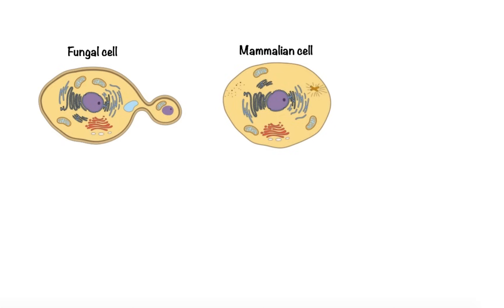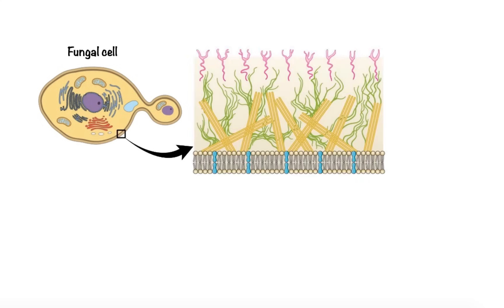The only significant difference between fungal and mammalian cells are the presence of fungal cell walls and a small structural difference in the plasma membrane. The cell wall of most fungi is composed of mannoproteins and rigid layers of complex polysaccharides — beta-1,3 and beta-1,6 linked glucans — as well as chitin.